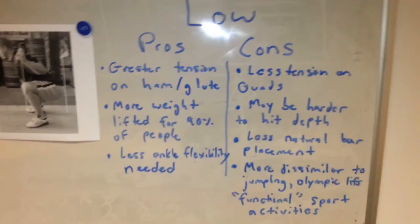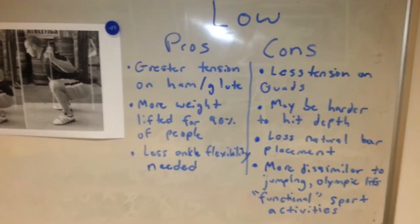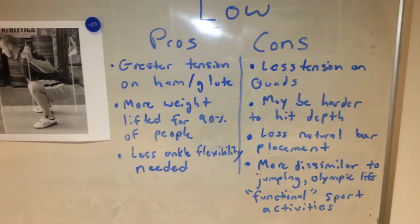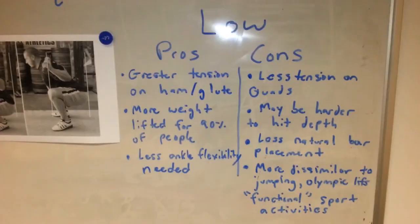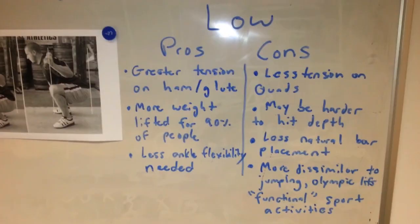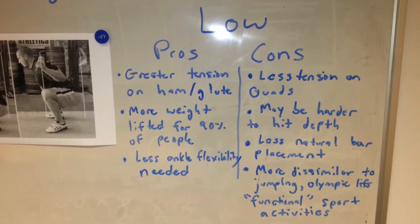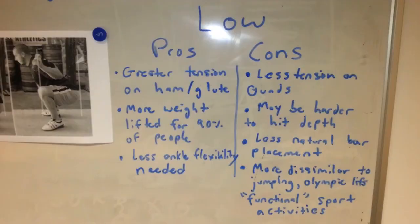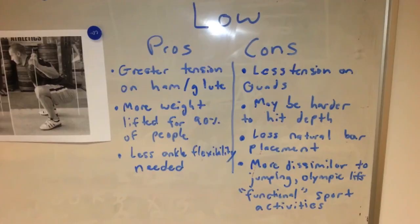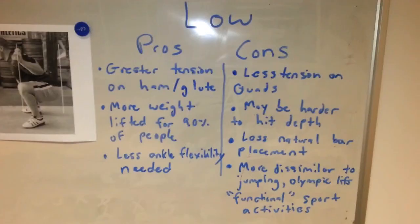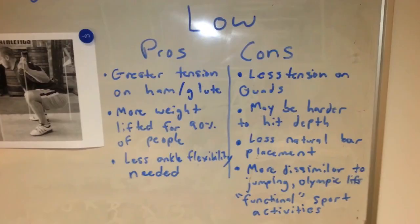You'll see more low bar squats get called on depth in competition than high bar. The more the bar is shifted forward, the easier it is to hit depth — unless you have an ankle flexibility problem. Low bar means less tension on the quads and more on the posterior chain. It's a less natural bar placement, but once you get used to it, it's really not bad — you just have to focus on setting your shelf and staying tight. A low bar squat is a rather unnatural movement overall and may not be similar to jumping, which most Olympic lifters wouldn't do.